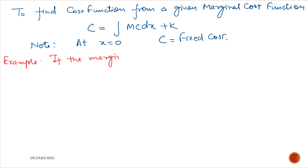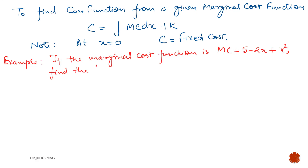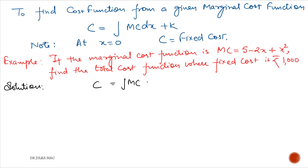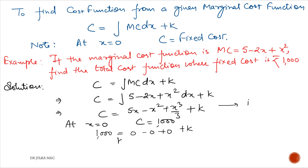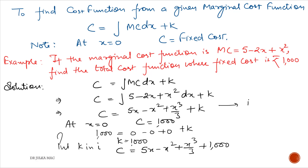Example 1: If the marginal cost of a product is MC equals 5 minus 2x plus x squared, find the total cost function where fixed cost is 1000 rupees. We know that C equals integration of marginal cost with respect to x plus k. Replace marginal cost by 5 minus 2x plus x squared. After integration, C equals 5x minus x squared plus x cubed by 3 plus k. At x equal to 0, cost equals fixed cost which is 1000. So k equals 1000. Therefore C equals 5x minus x squared plus x cubed by 3 plus 1000, which is the required total cost function.